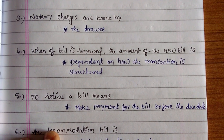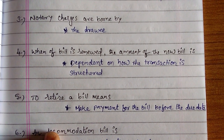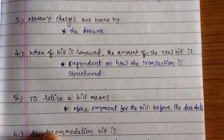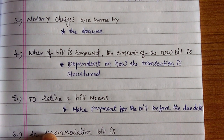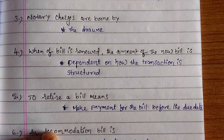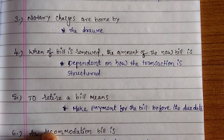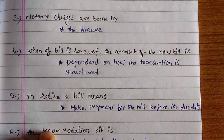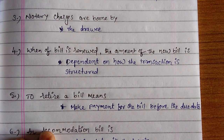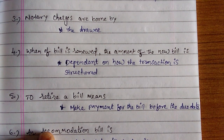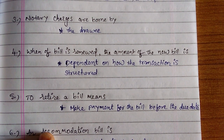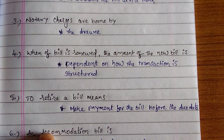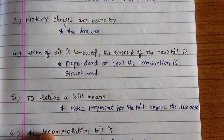Fourth one: when a bill is renewed, the amount of the new bill is dependent on how the transaction is structured. In renewal of a bill, both parties agree on an amount, and that amount will be continued on the bill of exchange.